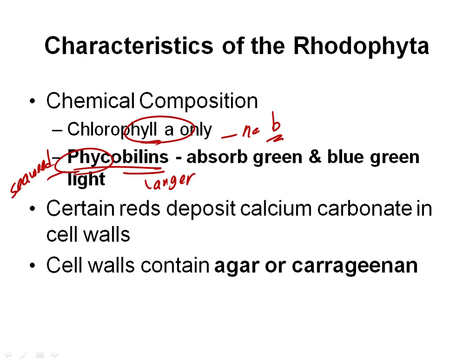Not all of them, but there are members of the reds that grow hugely deep. We've got a picture of one that grows around 260 meters, which is very deep in the ocean — almost no light at that place. Some of the reds deposit calcium carbonate. Chara is also called the brittlewort and also secretes calcium carbonate on its surface a little bit, but not as much as the red algae.